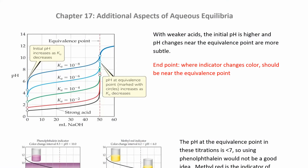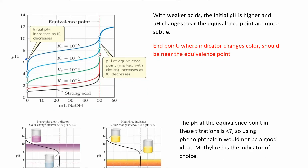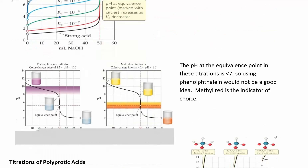Some final notes on titrations: the weaker the acid, the higher the initial pH. You can see these Ka values — this is the weakest acid, and strong acids start off at a really low pH and have a huge jump. The weaker the acid, the more subtle this change is going to be, and you start off at a higher pH. This is looking at starting with an acid and adding a base.